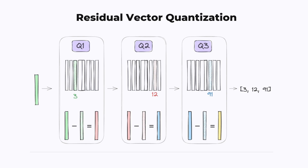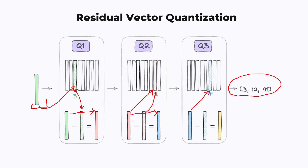Here is another diagram that illustrates the same idea in a different way. We have the original vector in green. It goes through the first quantizer — the nearest vector is index three, and this codebook vector is subtracted from the original vector to get the red vector, the first residual vector. In the second quantizer step, we look up the closest vector in the second codebook — it has index 12 — and we subtract it from this residual vector to get the second residual vector in blue. In the third step, we do the process again with the second residual vector and so on. At the end, we end up with a list of numbers where each number represents the index into one of the quantizers, and the more times we do this, the closer we get to representing the original vector.